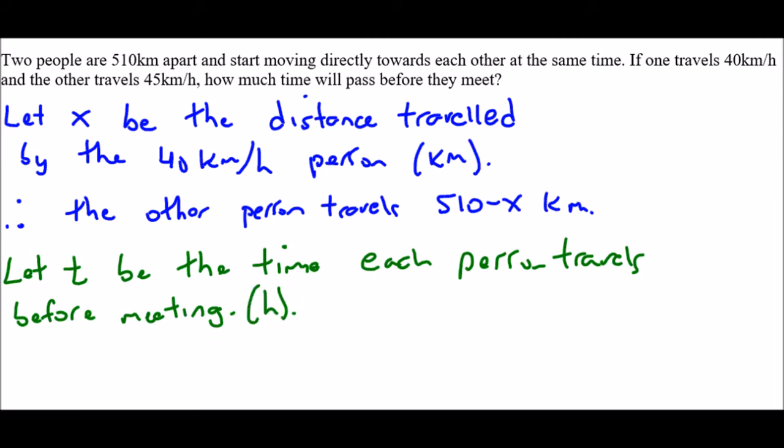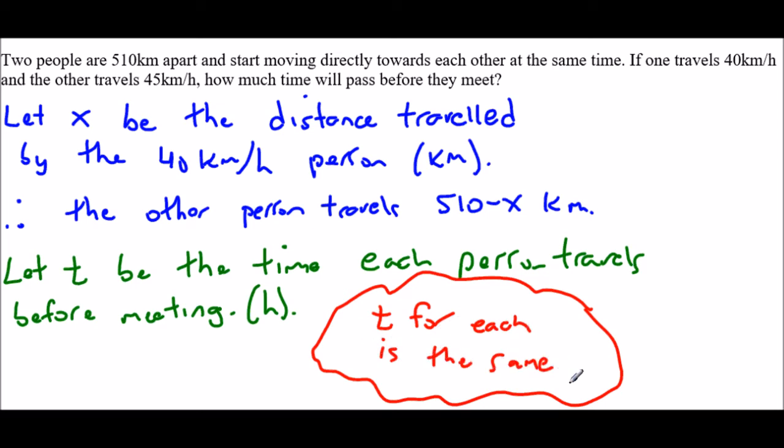Time is measured in hours. And of course, what we know, so again I'll just use this brain bubble over here, is that the times for each is the same. So they both travel the same amount of time, different speeds, different distances, but the time has to be the same because we need them to be in the same place at the same time. So those are my variables: X is going to be distance and T is going to be time, and time is going to be the same for each.